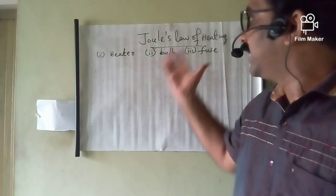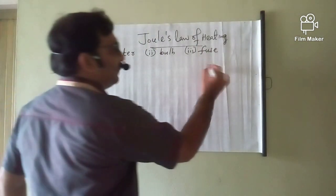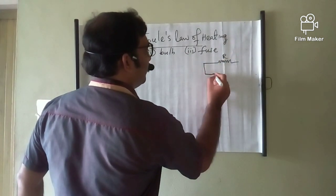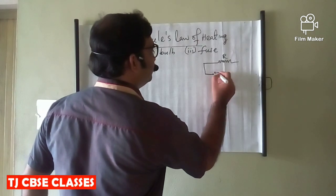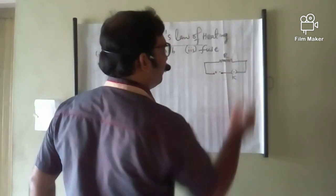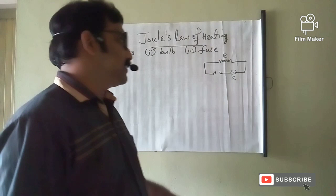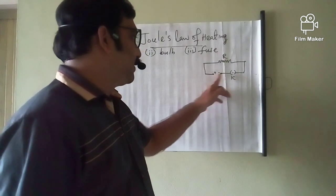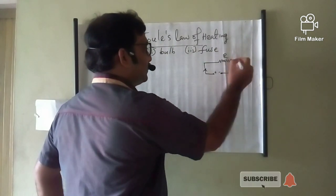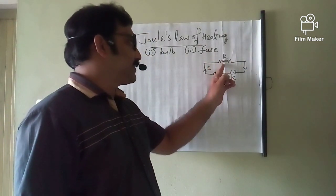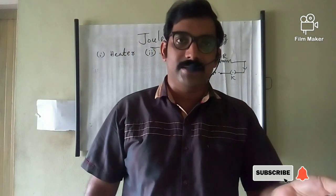Let's discuss more details about Joule's Law of Heating. Here we are considering one circuit. It consists of one resistance wire, one battery and a key. The key is used for on and off purpose. The battery has a positive pole and a negative pole. Due to this potential difference, a current is flowing through this resistance wire.